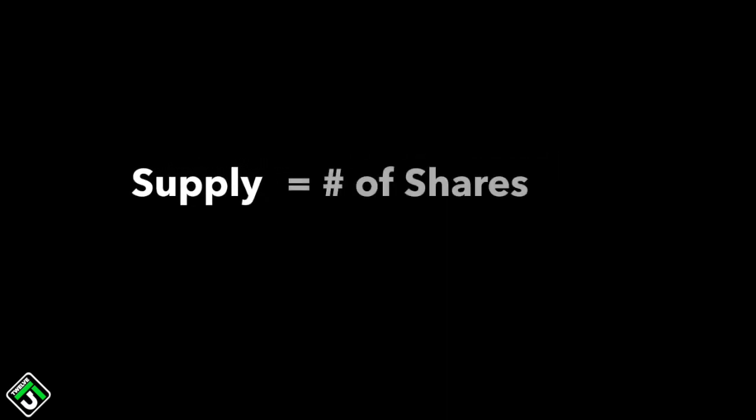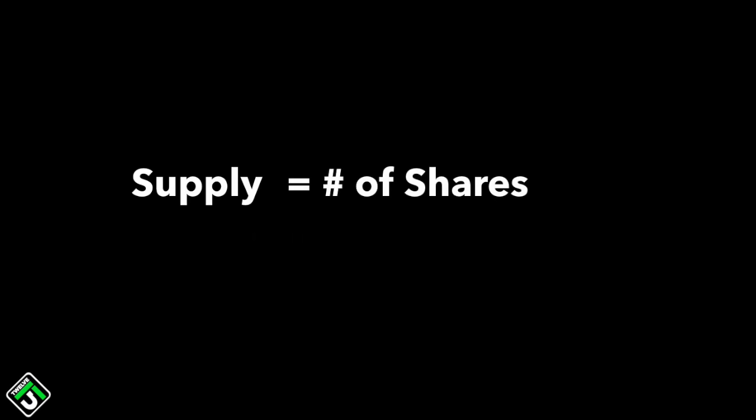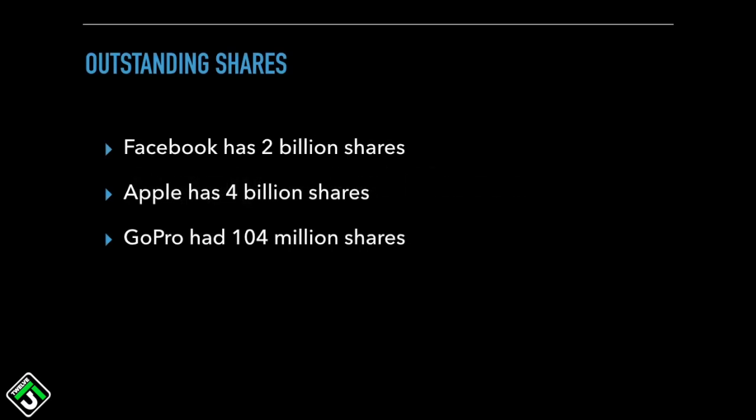The supply is literally the number of shares that each company has available, and every company listed on the stock market has a fixed number of shares available. Facebook has 2 billion shares, Apple has 4 billion shares, GoPro has 105 million shares. These numbers are total shares — no more, no less — and this is the stock supply.